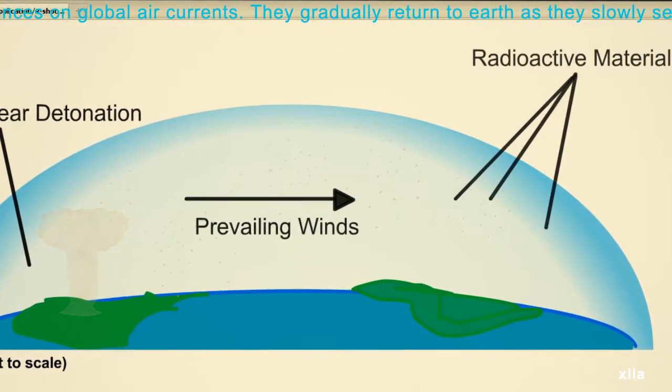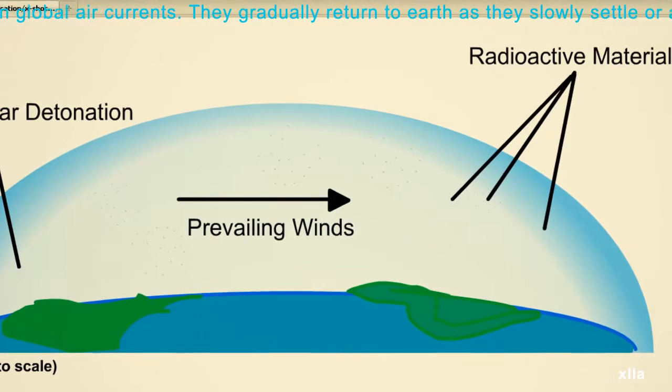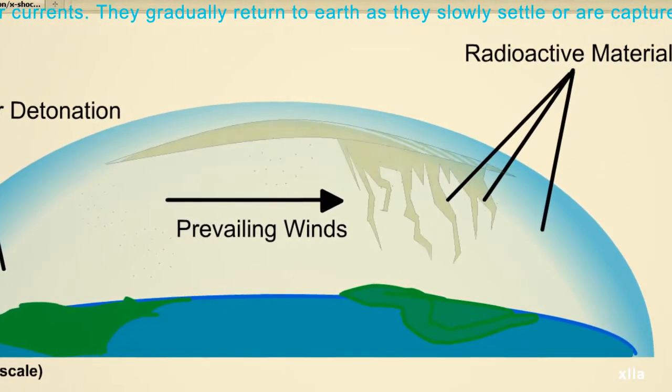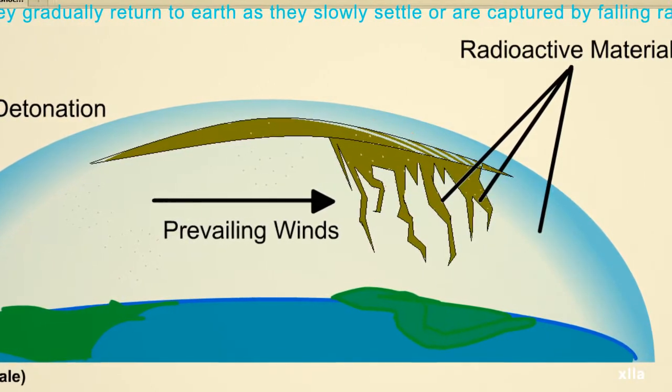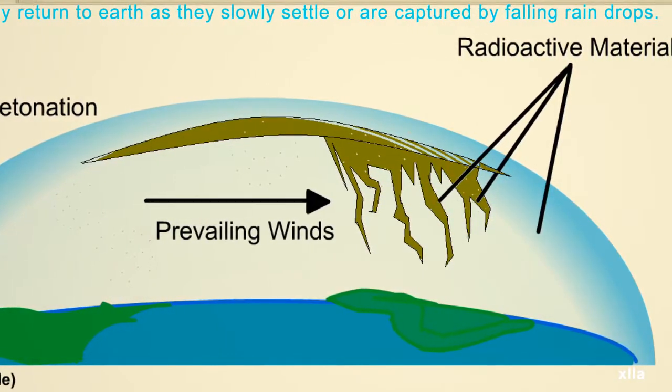Large particles injected into the atmosphere tend to fall close to the explosion site. Smaller particles and gases are carried higher, likely to remain aloft, and can travel great distances on global air currents.